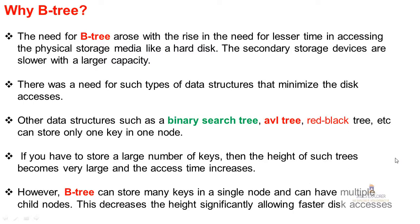In this video hum study karenge various properties of B-tree and why we use it. The need of B-tree arose with the rise in the need of lesser time accessing physical storage media like hard disk. Hard disk ka jitna size jada hoga, usko access karne me time bhi jada lagega — secondary storage devices slower hoti hain with larger capacity. So there was a need for a data structure that minimizes disk accesses for better performance with physical storage.